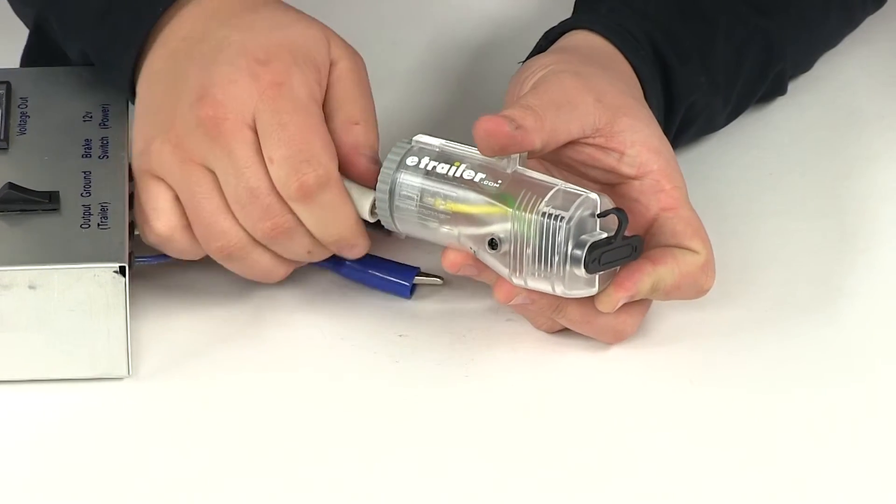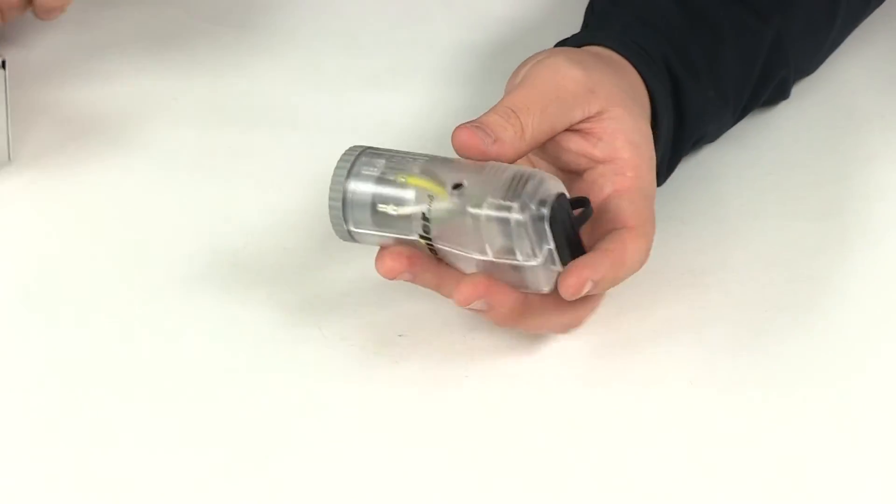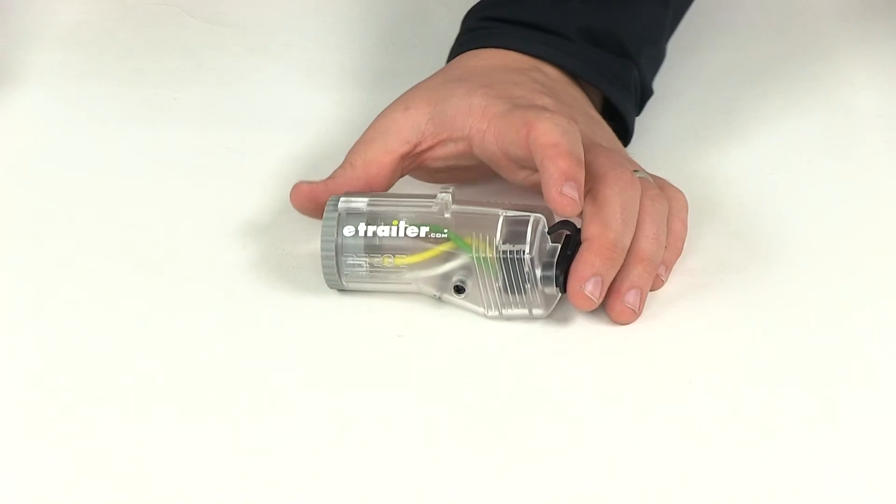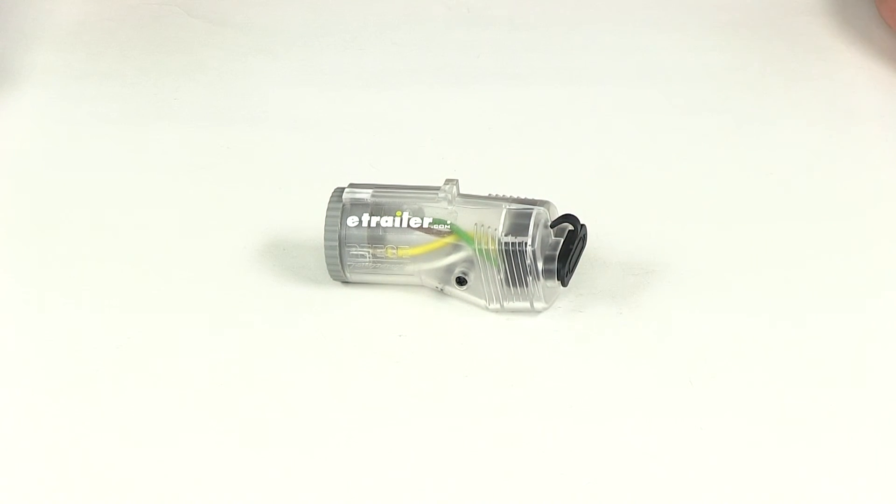That's going to do it for today's review of part number 78117. This is the Reese trailer connector adapter with Toglow LEDs for seven pole to four pole flat connectors.